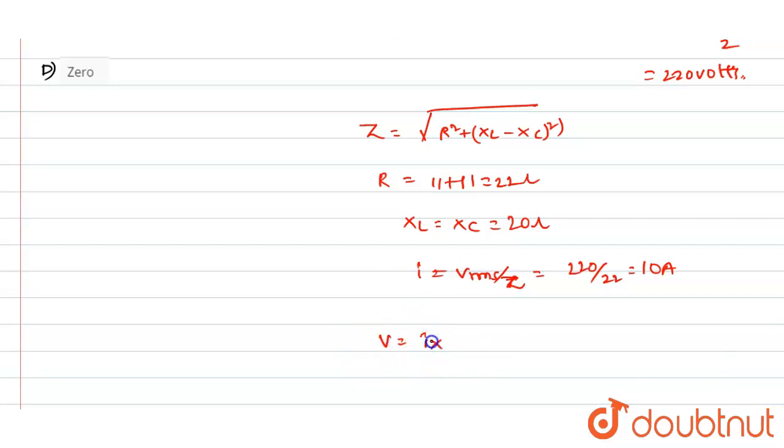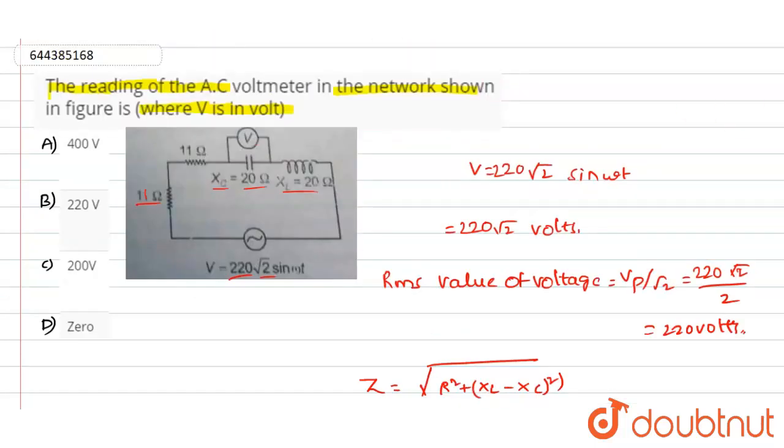So the voltage across the voltmeter V will be equal to I into Xc. We know the value of Xc, so 10 into 20 will be equal to 200 volts. So this is the value of the voltage that we have got. So out of these four options, we have option C, 200 volts. Option C is the correct answer for this question. Thank you.